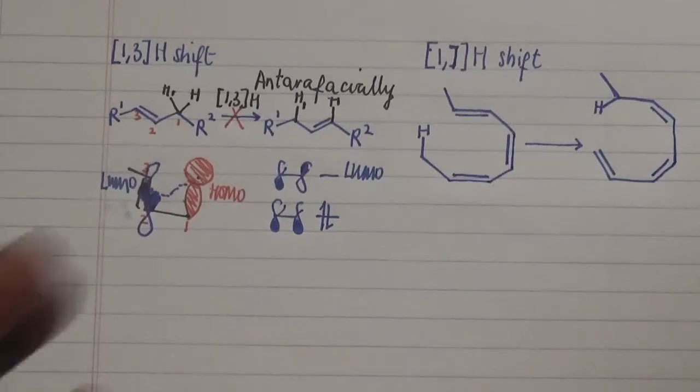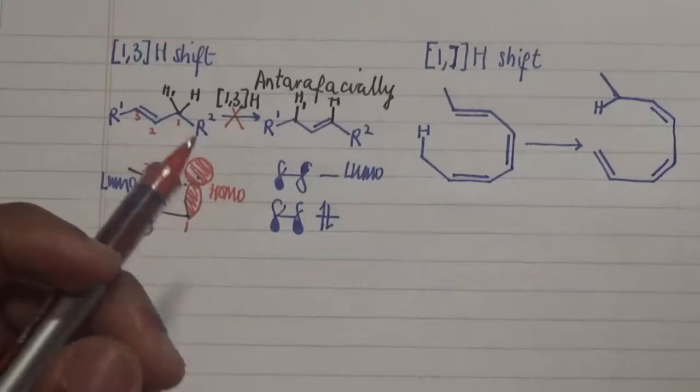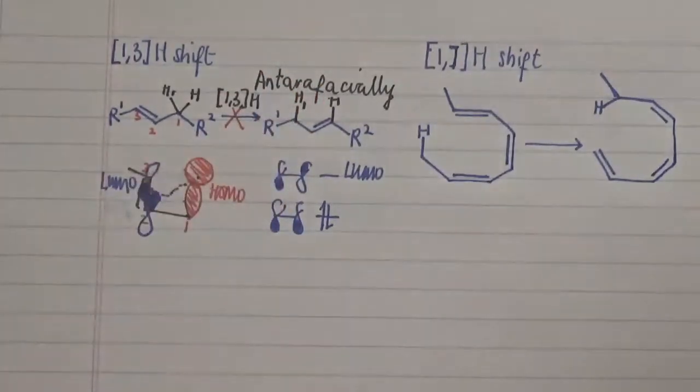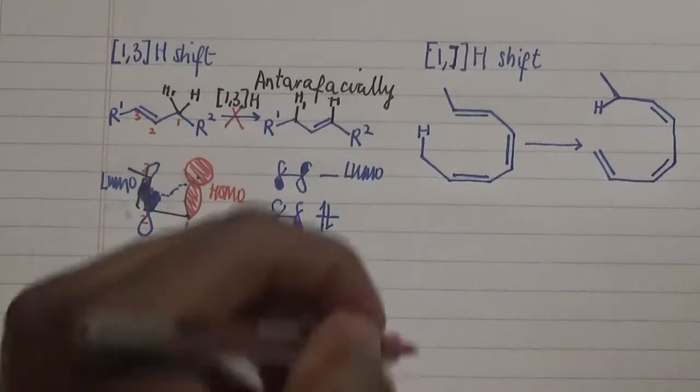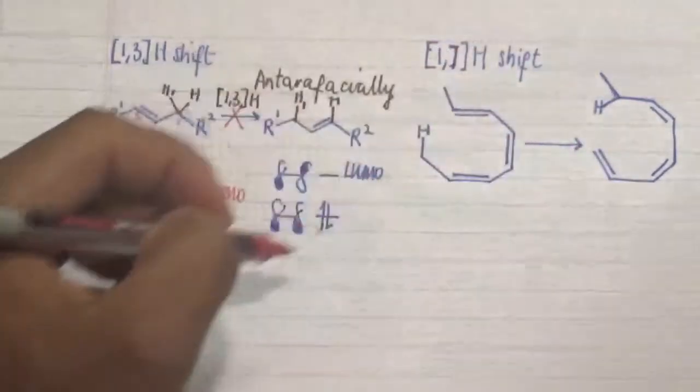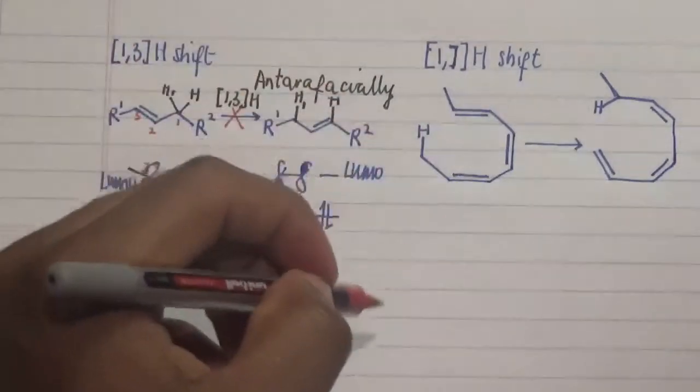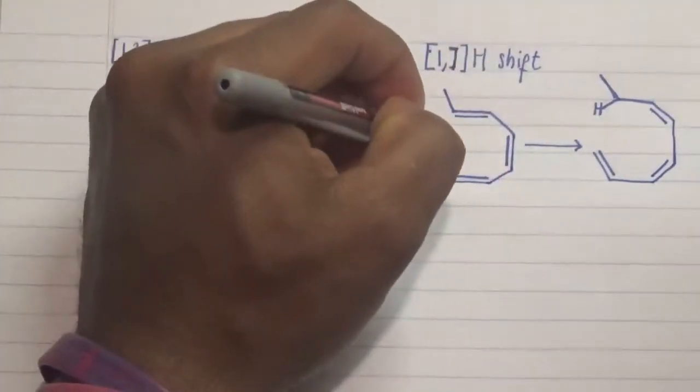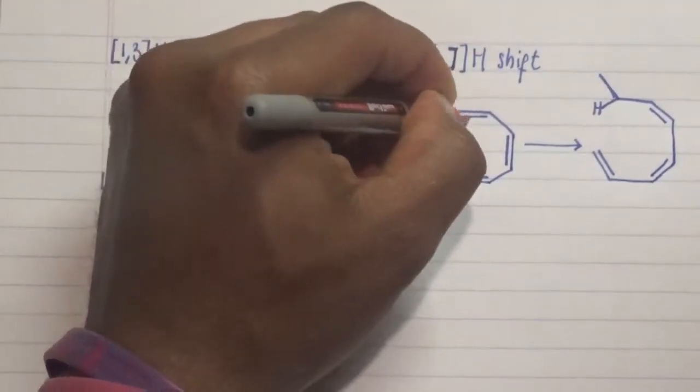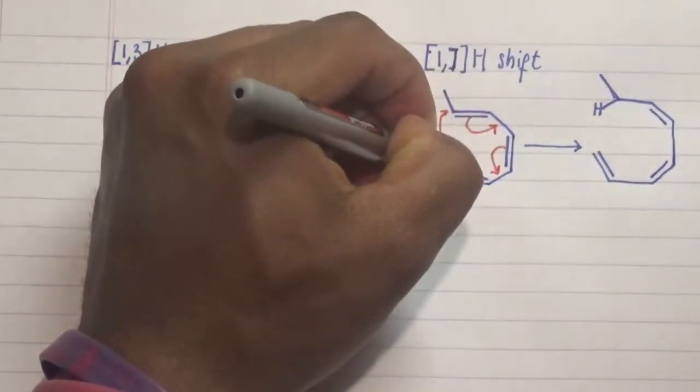The second one is 1,7 hydrogen shift. I said it will be antarafacial and this is actually determined by looking at the molecular orbitals. Now let's look at the first molecular orbital. We have this actually going in this pathway direction. Our arrows show that this proton actually moves here first and then goes over to here and goes over there and this moves over here.